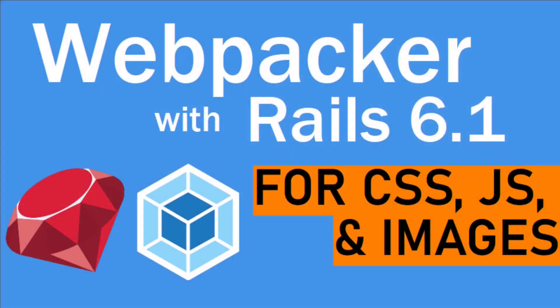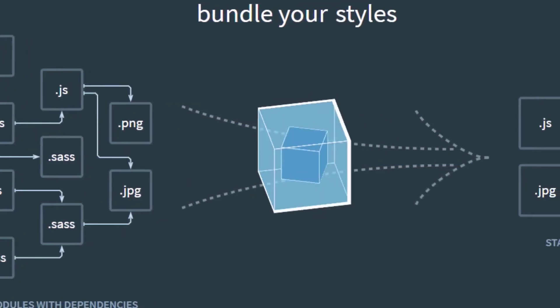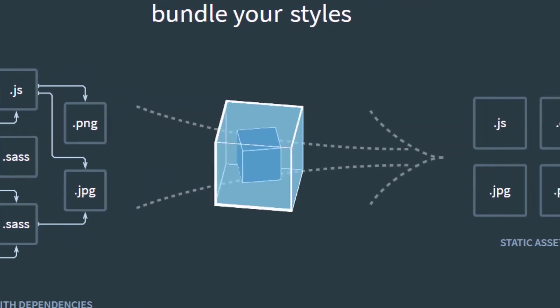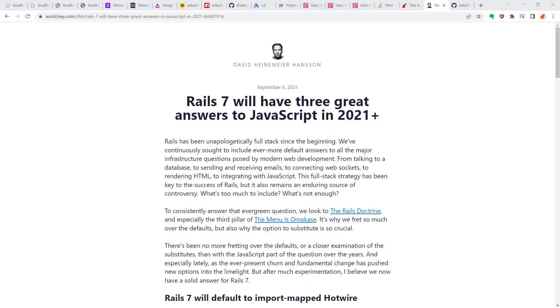In Rails version 5 and very prominently in version 6 we were using the Webpacker gem to package and bundle our JavaScript assets, and we could also do our stylesheets that way as well. But in Rails 7 there's kind of a paradigm shift, so I'm going to be covering that in this video and give you my impressions, using the context of this DHH blog article. In this article he talks about how Rails now gives you three options on how you can do the front end in your application, and I think this is probably the biggest change going from version 6.1 to version 7.